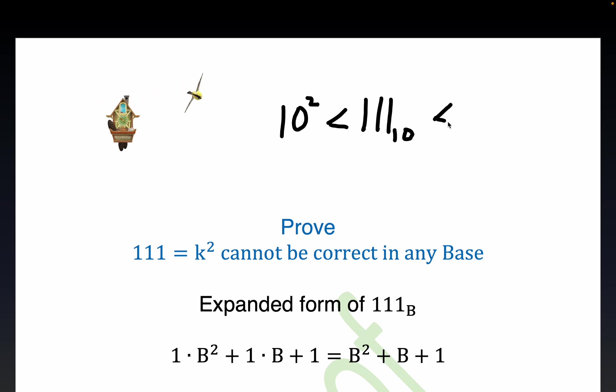But notice that 111 is manifestly not a perfect square since it's trapped between two consecutive squares, namely 10 squared and 11 squared. 10 squared being 100, 11 squared being 121. So 111 can't be a perfect square because it's stuck between two perfect squares.